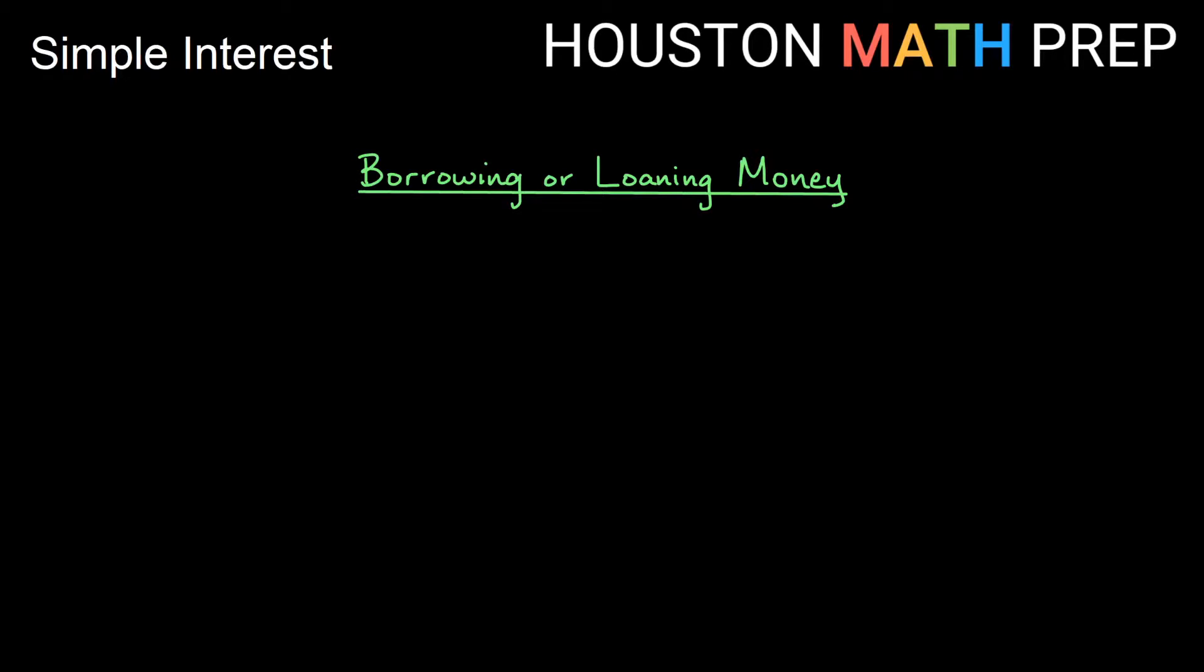Welcome back everybody, Houston Math Prep here. When there is borrowing or loaning of money going on, oftentimes there is interest involved. If you are the one borrowing the money, then that means you are likely paying the interest to the other party. If you're the one loaning money to somebody else, then they are paying you interest. When interest is calculated and paid all at the end of what we call the term of the loan or how long the loan is for, then that is called simple interest.